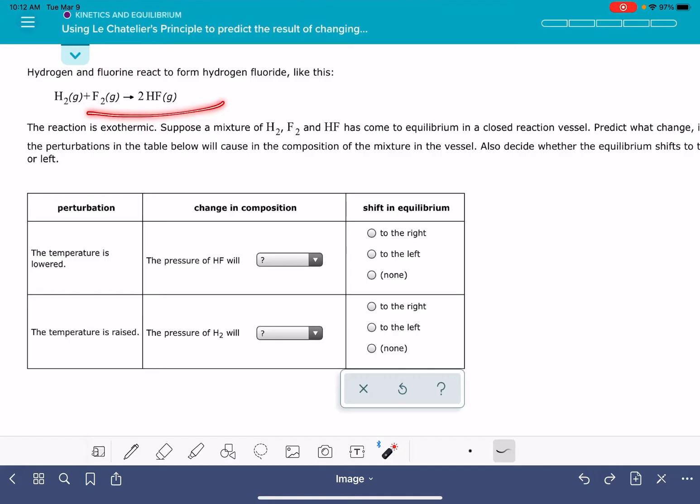In this problem, you'll be given a chemical reaction and told that the reaction is in equilibrium, and then you're going to be given two situations involving changing temperature for this particular system.